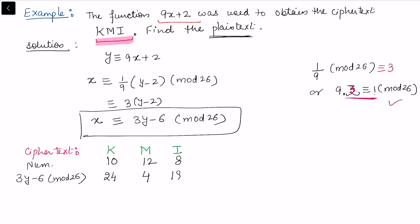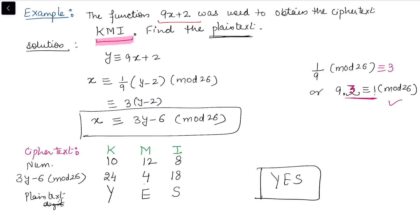Continuing, for I (y=8): the result mod 26 is 18. So the plain text digits are 24, 4, and 18. From the standard table: 24→Y, 4→E, 18→S. Therefore, the plain text corresponding to the ciphertext 'kmi' is 'yes'.